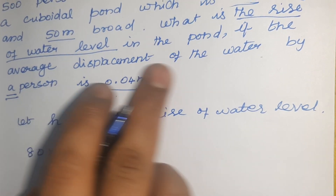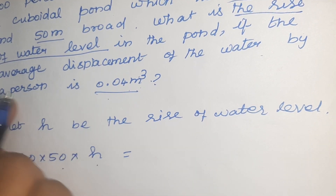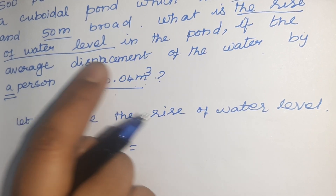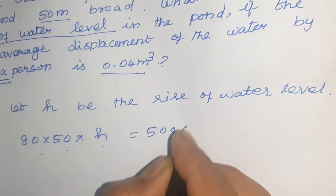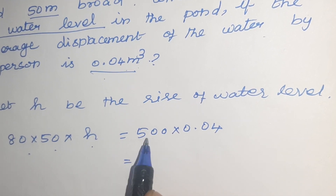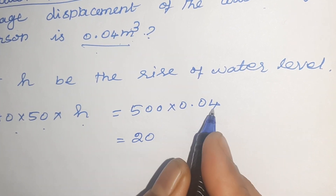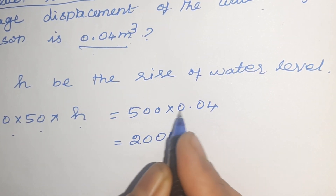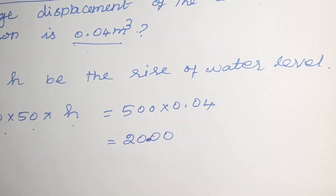The average displacement of the water by a person is 0.04 meter cube — that is for 1 person. So for 500 persons, the average displacement of water is 500 × 0.04, which equals 20.